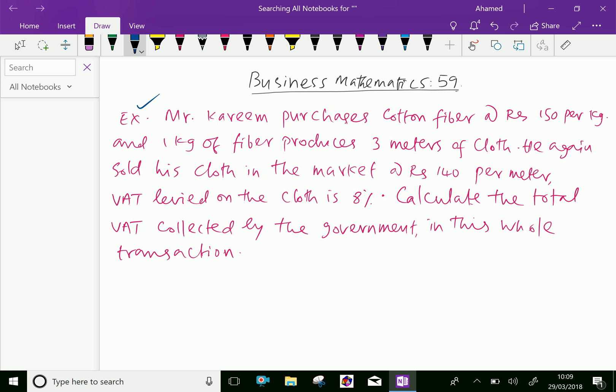Mr. Kareem purchases cotton fiber at Rs. 150 per kg and 1 kg of fiber produces 3 meters of cloth. He again sold his cloth in the market at Rs. 140 per meter. VAT levied on the cloth is 8%. Calculate the total VAT collected by the government in this whole transaction.